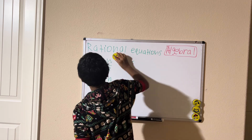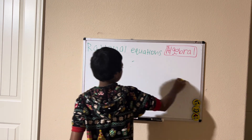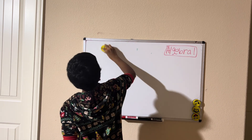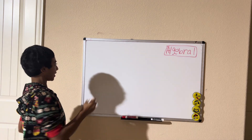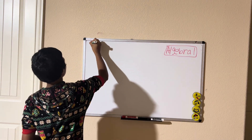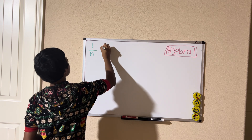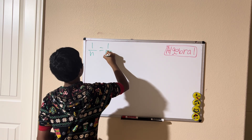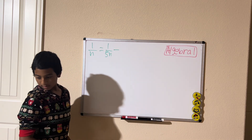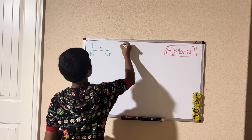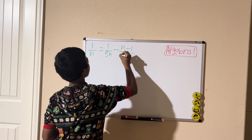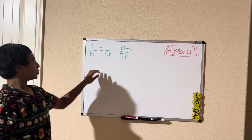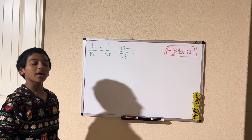Let's give another example. Let's say we have 1 divided by n equals 1 divided by 5m minus n minus 1 divided by 5m. How about you try and see if you can solve this one first before I do.